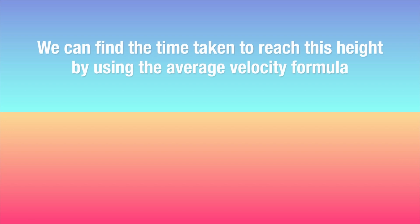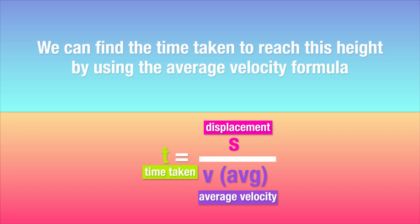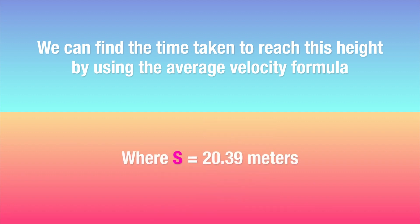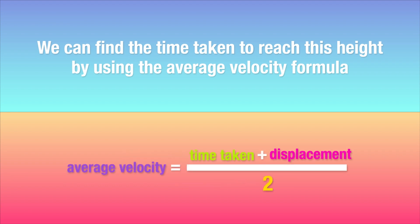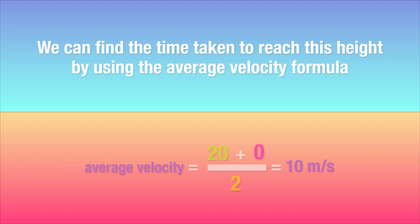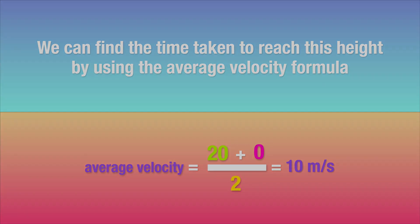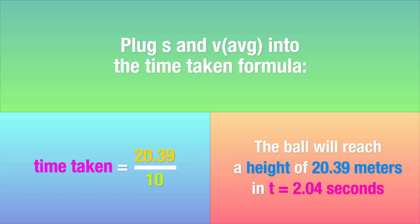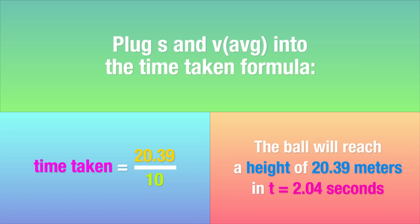Now we already have the formula for the average velocity, we just have to rearrange it. Since we just found the displacement to be 20.39 meters, we can just plug that in. We can also use the initial and final velocity to find out the average velocity to plug in. For this question, the average velocity is 10 meters per second. When we plug these values into the average velocity formula that we've rearranged, the time comes out to 2.04 seconds.